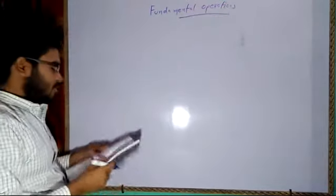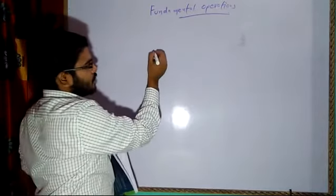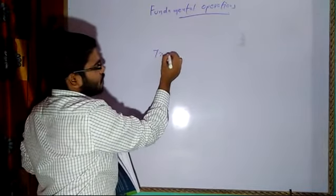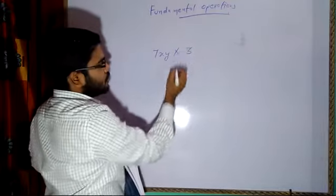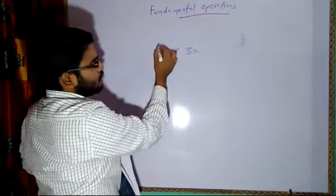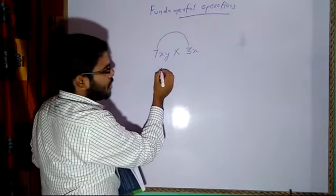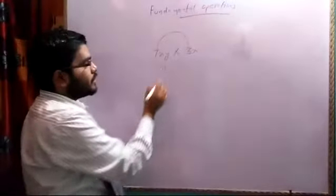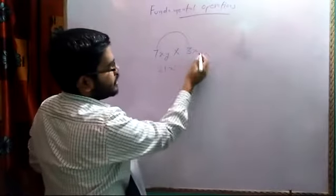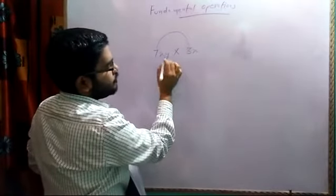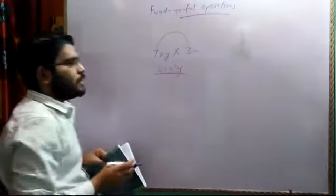In fundamental operations, suppose I have a number like 7xy and we have to multiply it with 3x. Then the constant will be multiplied with the constant: 7 times 3 is 21, x into x will become x square, and there is only one y here, so our answer will be 21x²y.